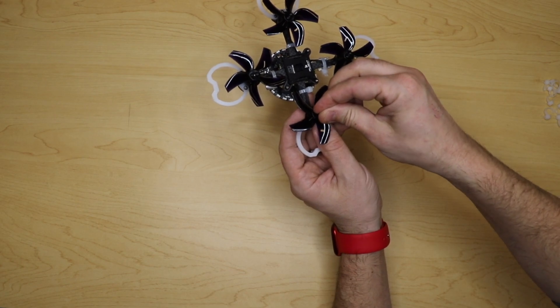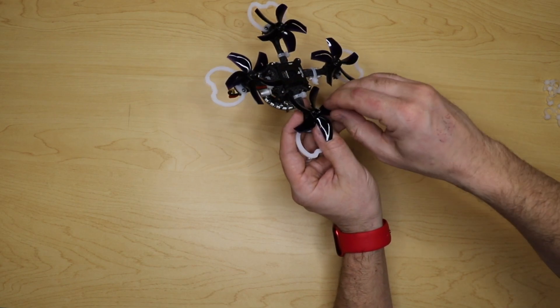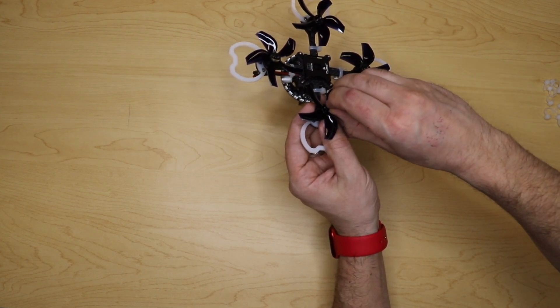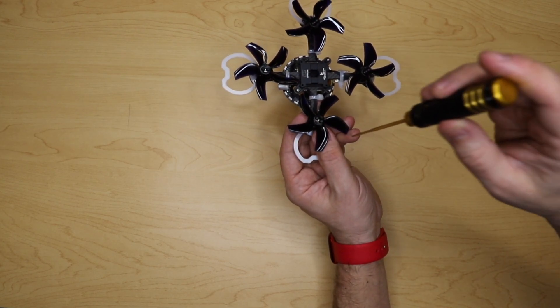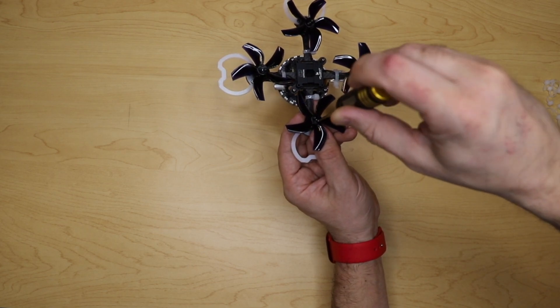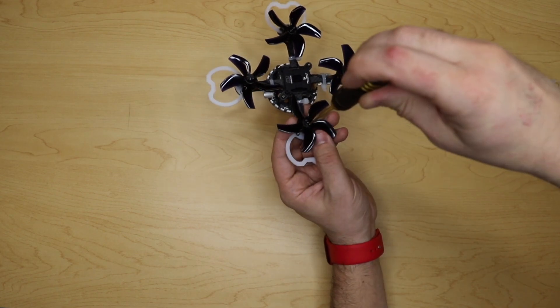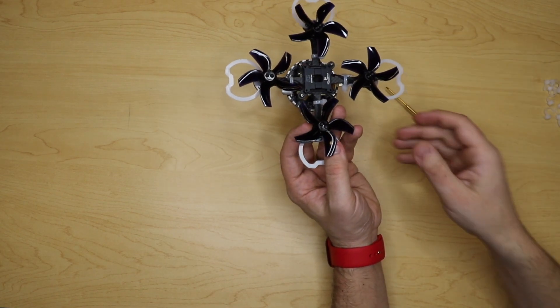If you find that the screw just continues to spin or you're getting a lot of resistance with it popped up like this, then you know that you are not in the hole properly and you then need to realign it, readjust it, make sure that it's got the right hole, it's into the right spot. Get it until it's finger tight and the propeller's all set.